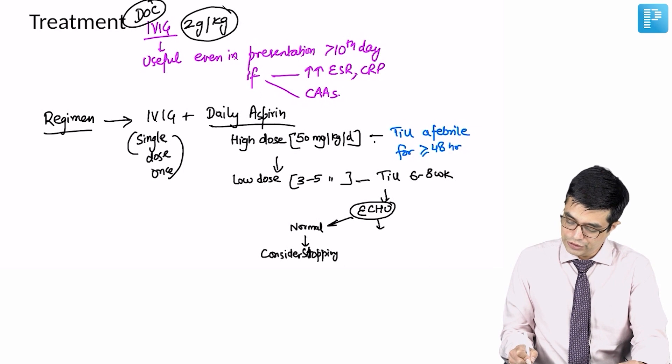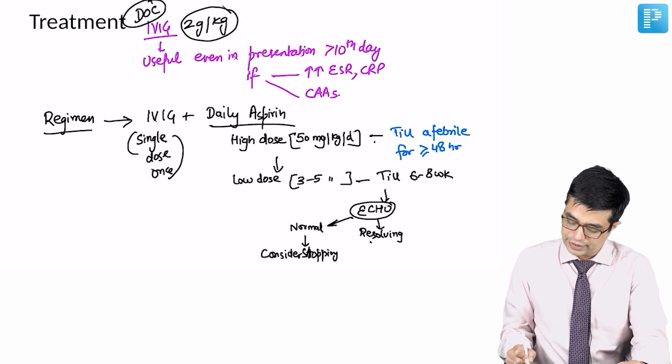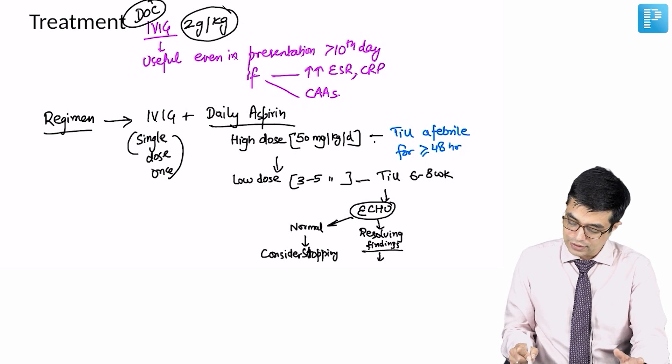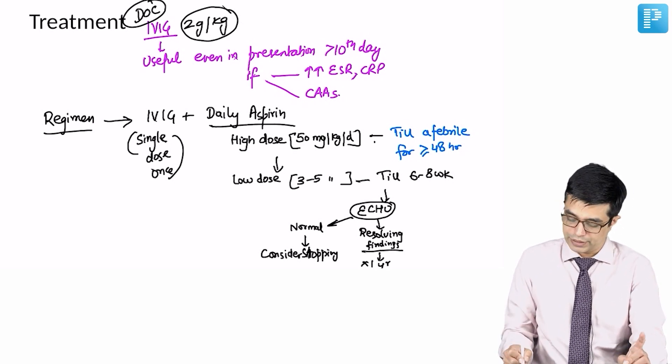If echocardiography shows resolving findings, like initially there was aneurysm present, now aneurysm size has decreased, complications are going away, then you will continue aspirin for 1 year. Low dose aspirin will be continued for 1 year.